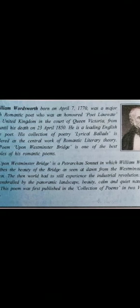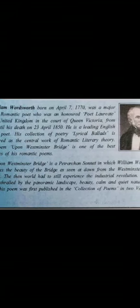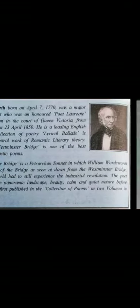Upon Westminster Bridge is a Petrarchan sonnet. A Petrarchan sonnet has 14 lines — one stanza of 8 lines and another stanza of 6 lines. In this Petrarchan sonnet, William Wordsworth describes the beauty of the bridge. The poet describes the beauty of London as seen at dawn from Westminster Bridge. The world had yet to experience the industrial revolution. The poet was enthralled by the panoramic landscape, beauty, calm, and quiet nature before him. This poem was first published in the collection Poems in Two Volumes in 1807.